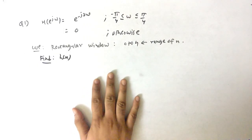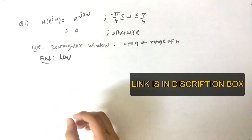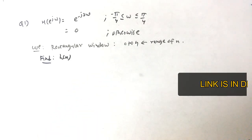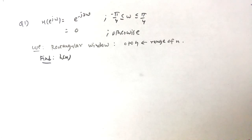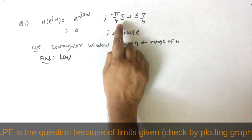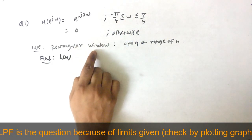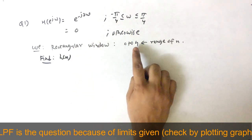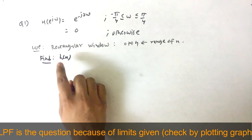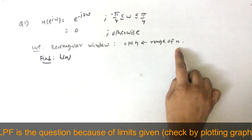Before solving this question, you should know the basics of FIR filters, which I have already covered in my previous videos. The first question we have: H(e^jω) is given, the cutoff frequency is given, the rectangular window range is 0 to 4, and we have to find h(n). This is FIR — finite impulse response — because n is given.